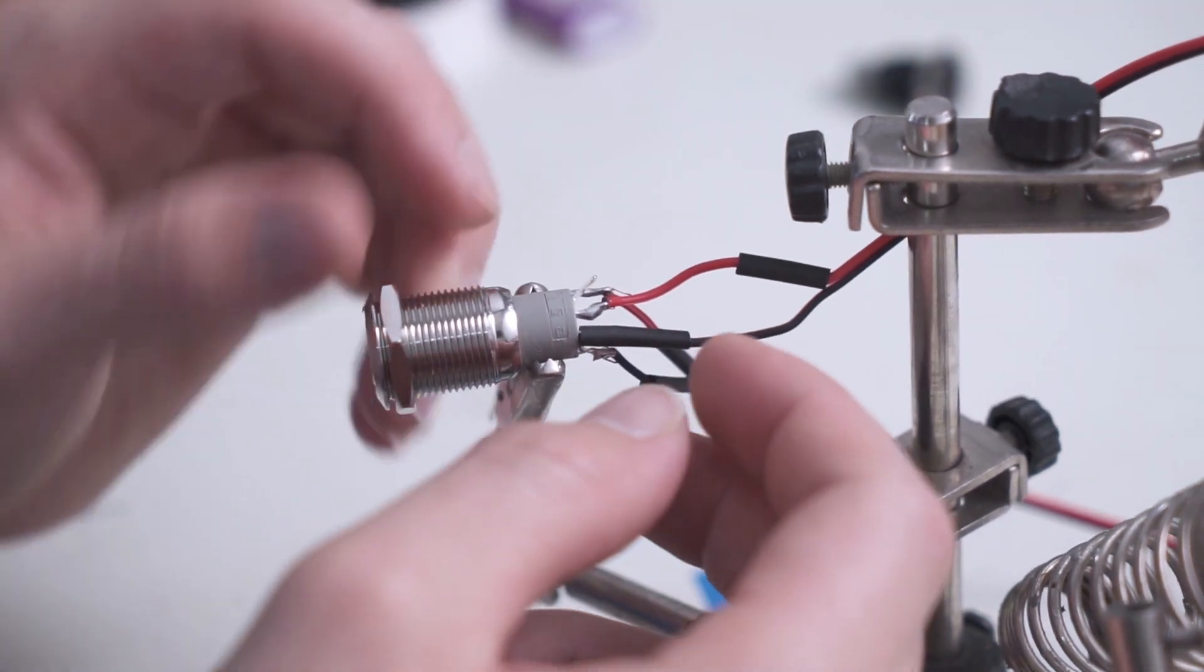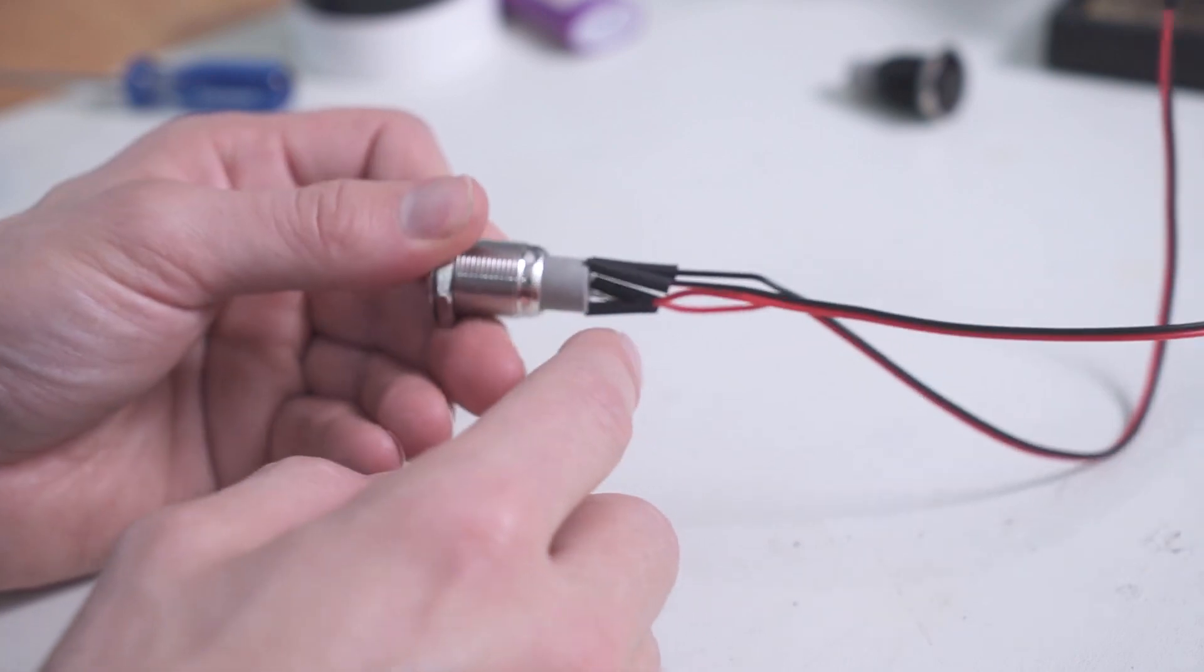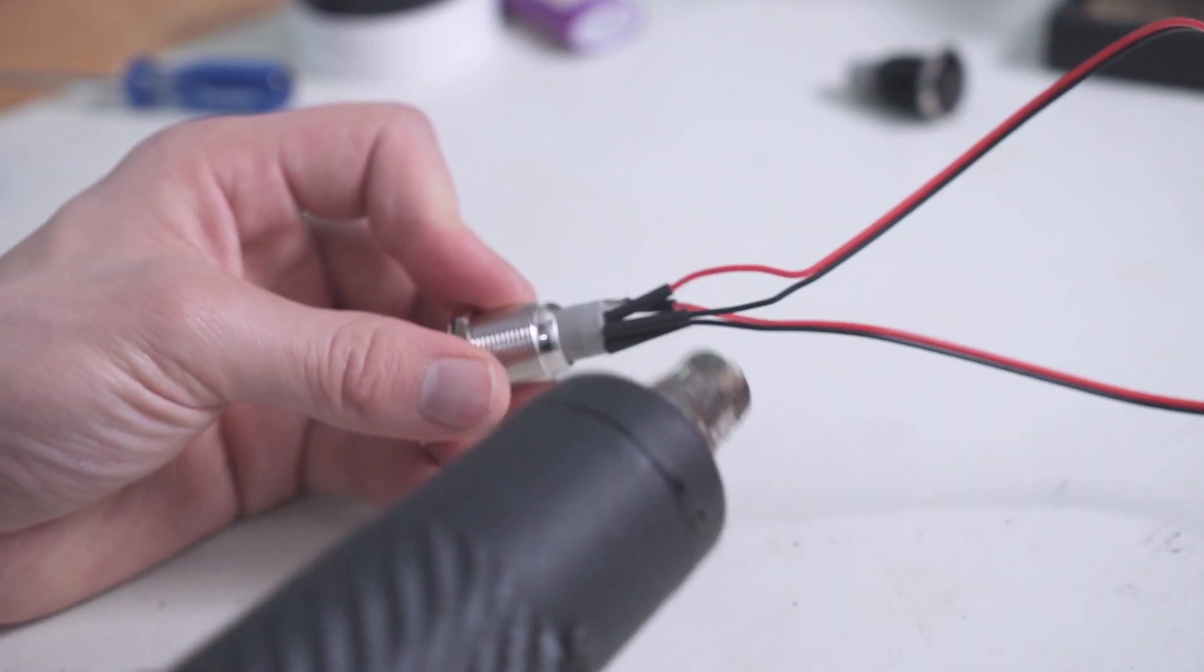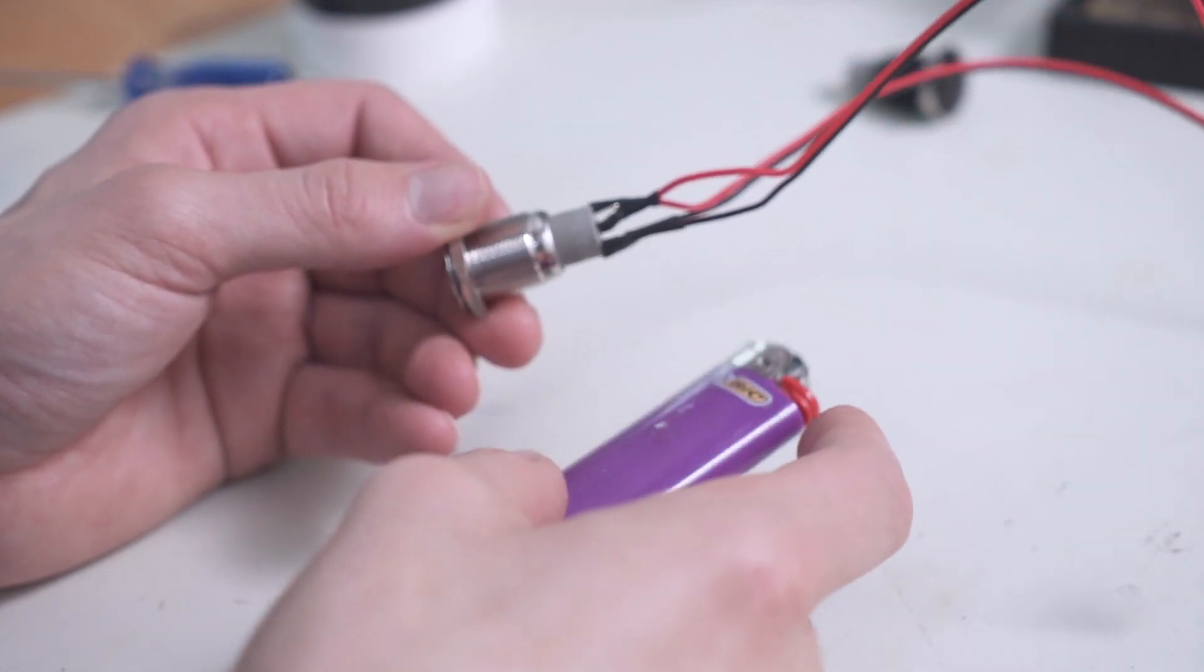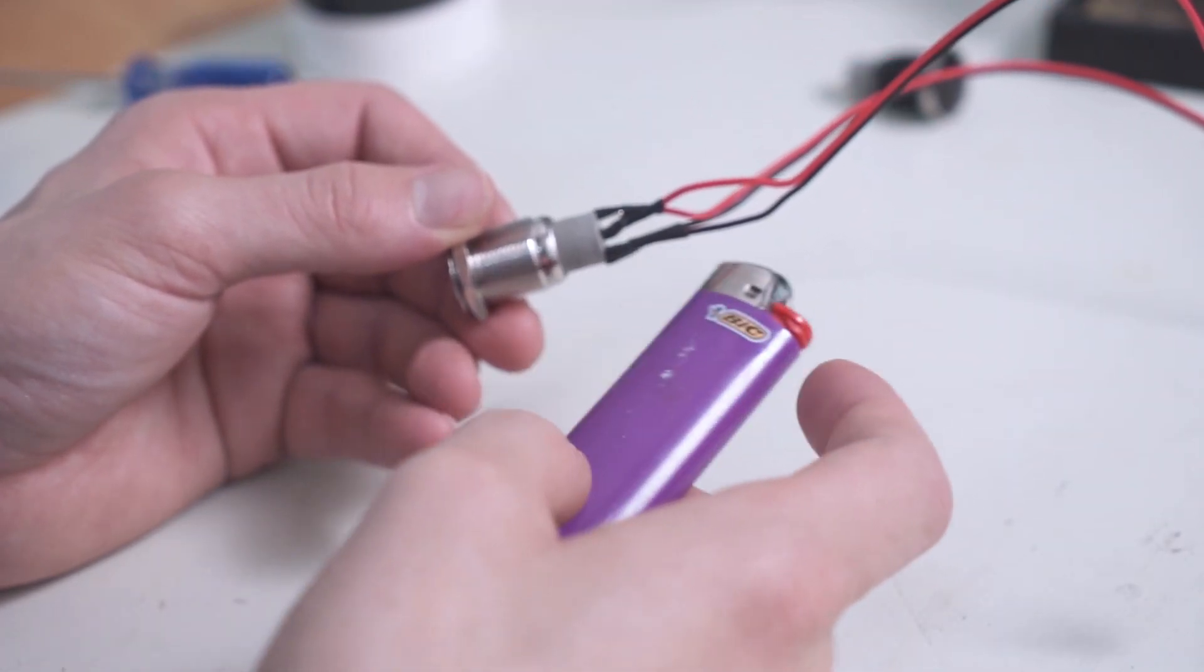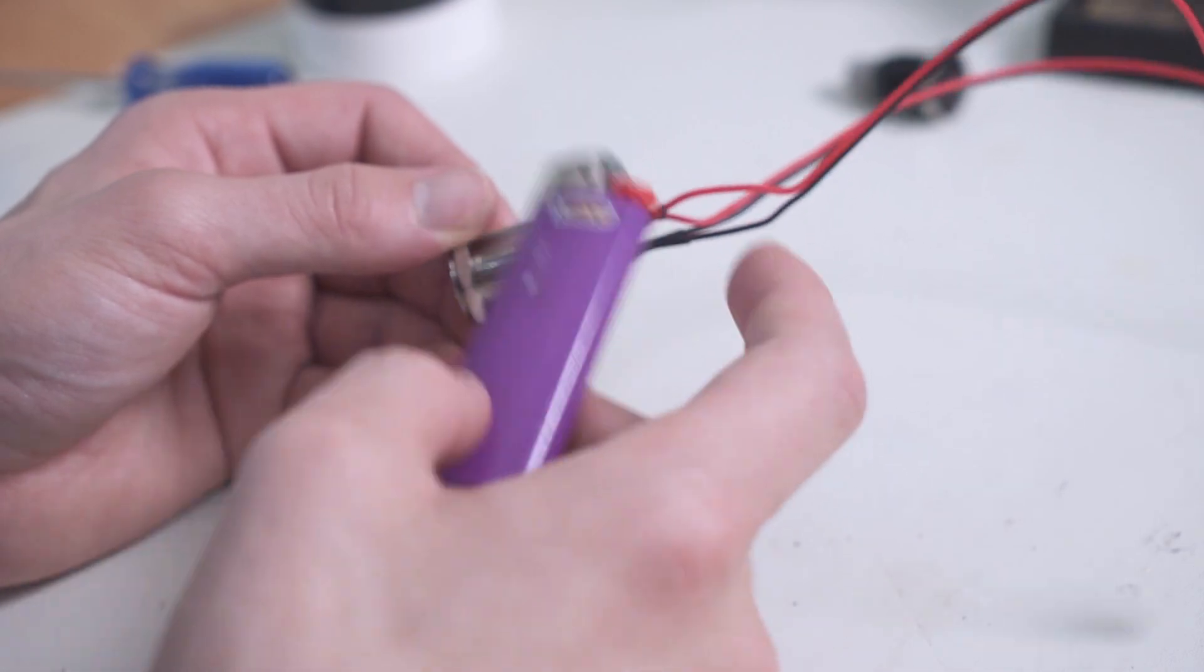Then push the heat shrink over your terminals. Once the heat shrink is over your terminals, you can use the heat gun to shrink them in place. If you don't have a heat gun, you can use a lighter, but it takes more finesse because you can easily burn the insulation, the cables, and even the switch housing.